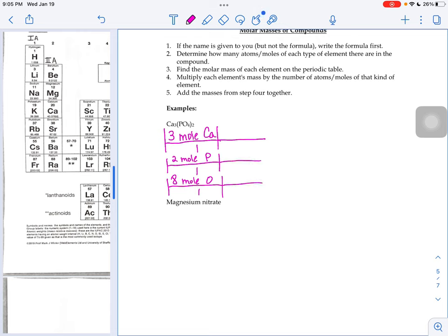We would go to our periodic table and say, well, I don't know how much three moles of calcium weighs, but I do know how much one mole weighs. One mole weighs 40.078 grams. So if we just round that to the tenths place, that would round to 40.1. The calcium part weighs 120.3 grams.